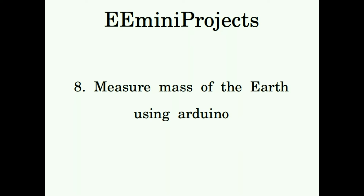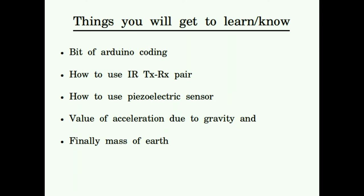First, let's look at what you are going to learn from this mini project. You'll learn a bit of Arduino coding, you'll learn how to use an IR transmitter-receiver pair — the IR transmitter is an IR LED and the IR receiver is a photodiode. You'll also learn to use a piezoelectric sensor, and we'll learn a bit about acceleration due to gravity. Some of you might already get the idea of what method I'm talking about.